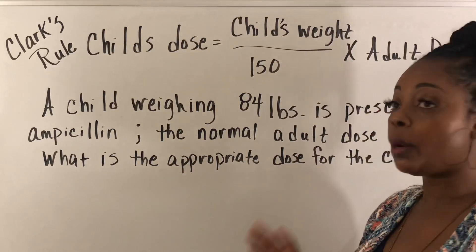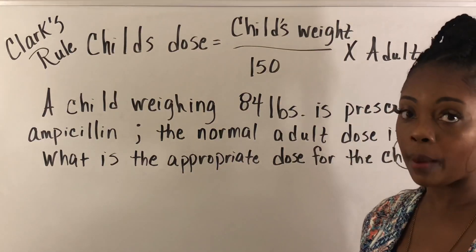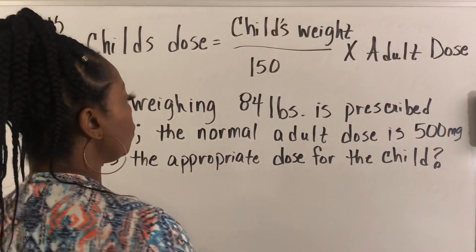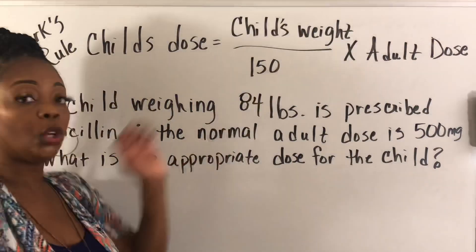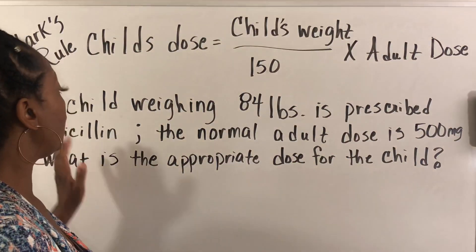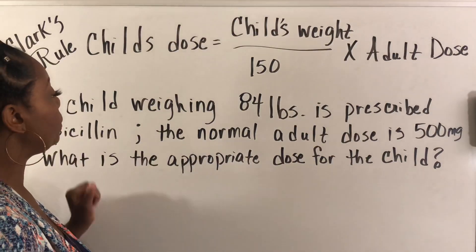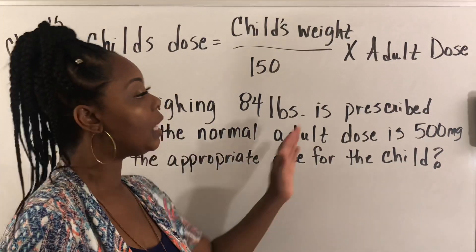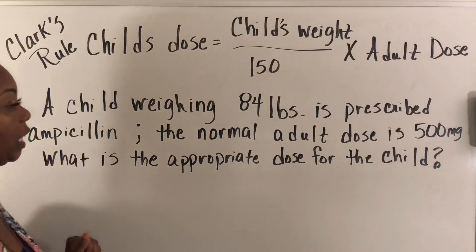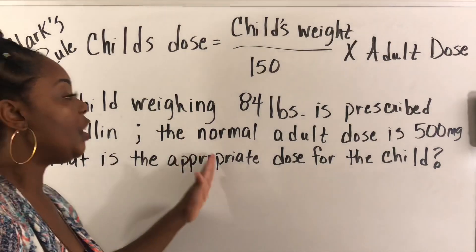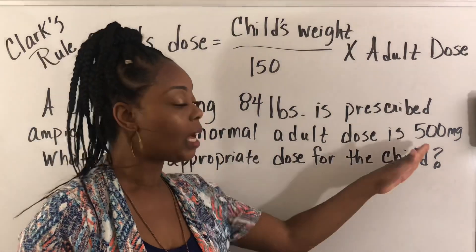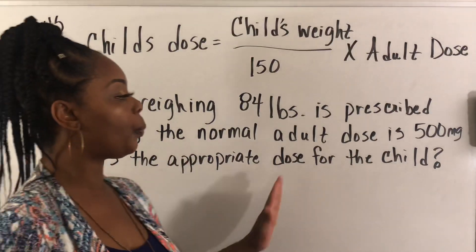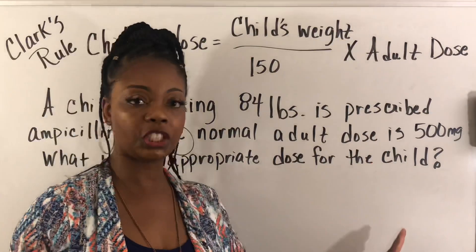We have one more problem after this one. Still using Clark's Rule, same formula. This problem says a child weighing 84 pounds is prescribed ampicillin. The normal adult dose is 500 milligrams. What is the appropriate dose for the child?